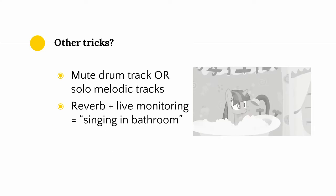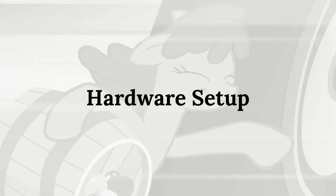Other tricks I use include muting the drum track and only listening to melodic tracks while recording, which is supposed to help me stay in tune by not getting distracted by the drums. Another thing I've tried is putting on a reverb track while monitoring my own voice to kind of fake the singing-in-the-bathroom effect. So those are all the things that you can do to help you get better recordings on the instrumental end.